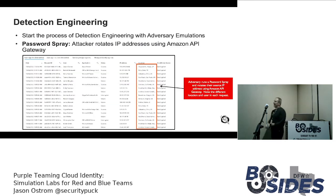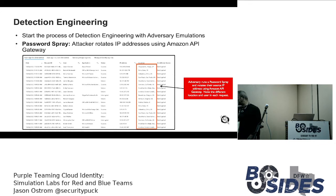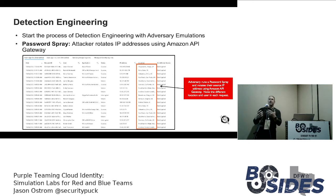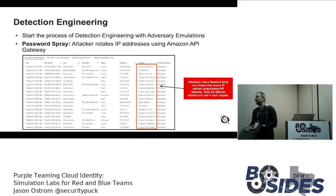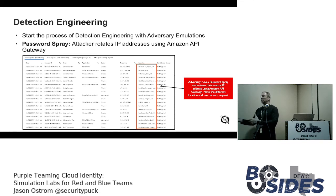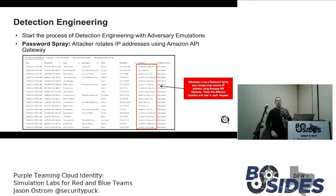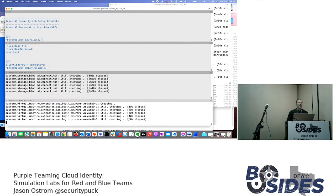We're mapping attacks into the Azure Threat Research Matrix and looking at our logging and security controls to detect them. Here's an example — I generated 300 users and then did a password spray against my own tenant. Azure has a feature called Azure Smart Lockout that detects password spraying and invalidates results, so you have to be careful scanning for valid Azure users. But it can be bypassed by rotating IP addresses using the infinite network capability of the cloud. I'm using Amazon API Gateway to rotate my IPs.